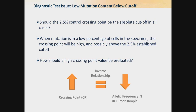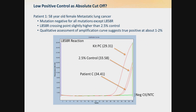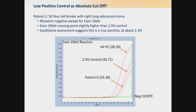We have two clinical samples to explore this. The first is a 58-year-old female with metastatic lung cancer who is mutation negative for all variants except perhaps EGFR L858R. The L858R crossing point is slightly higher than the 2.5% control, but when compared to the negative or no template control, qualitative assessment shows this is a true positive of about 1% to 2%. The second case is a 58-year-old female with right lung adenocarcinoma who is mutation negative for all variants except perhaps the exon 19 deletion. The crossing point is higher than the established 2.5% control, but again, qualitative assessment of the patient's amplification indicates this looks like a true positive.